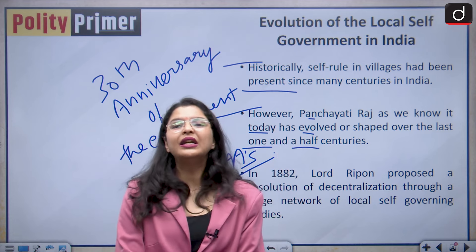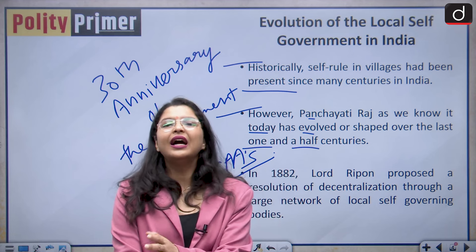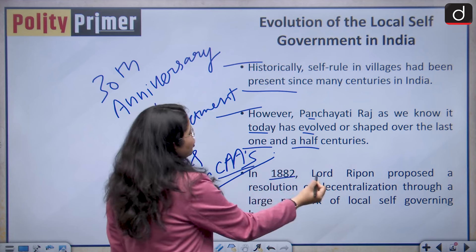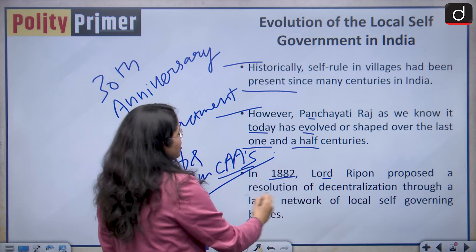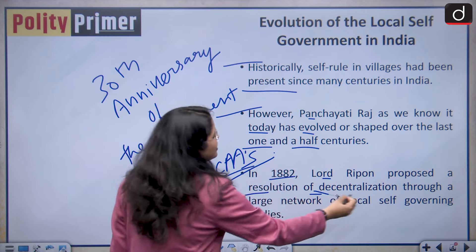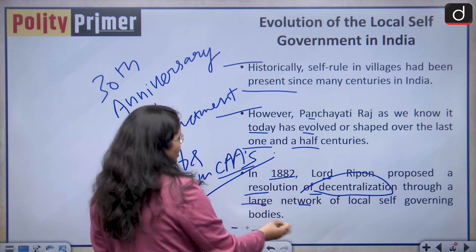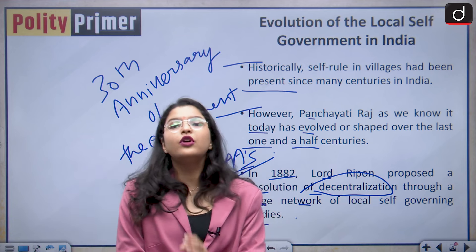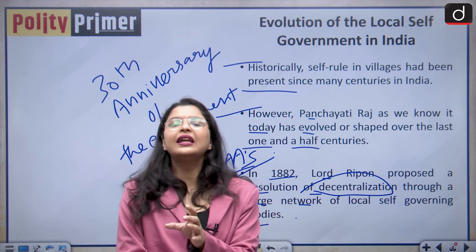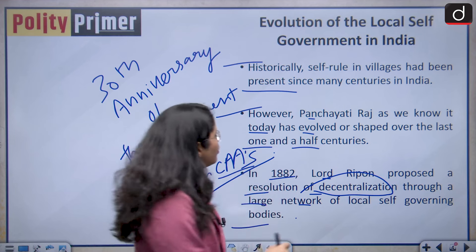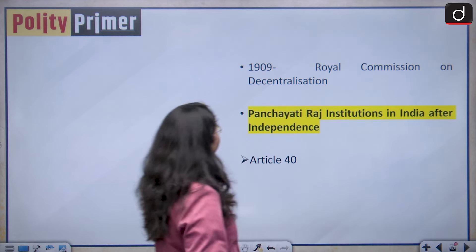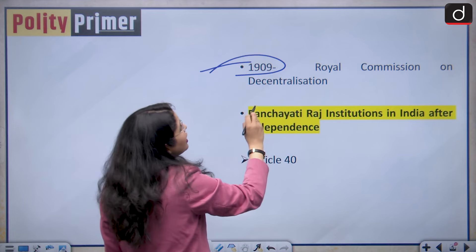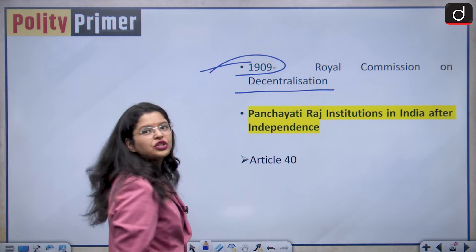The British government which was ruling over India had a role to play in shaping local self-government. In 1882, Lord Rippon proposed a resolution of decentralization through a large network of local self-governing bodies. This proposal was firstly brought in the year 1882 by Lord Rippon. Moving forward, in the year 1909, the Royal Commission on Decentralization was formed.